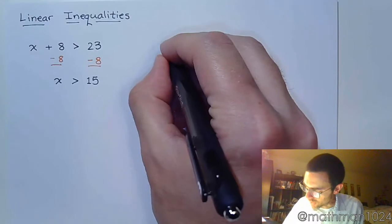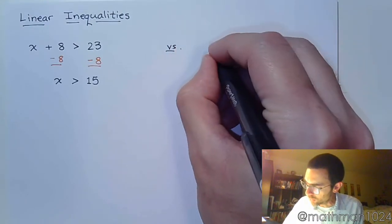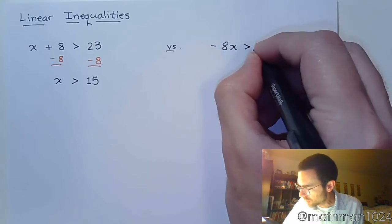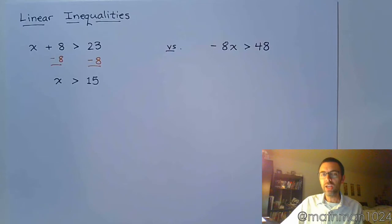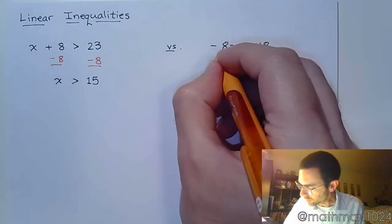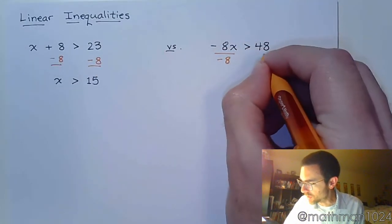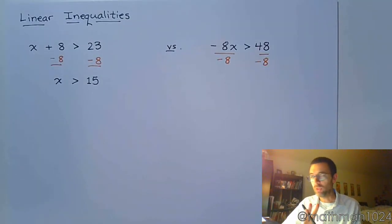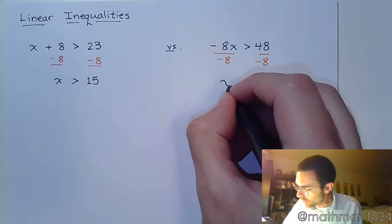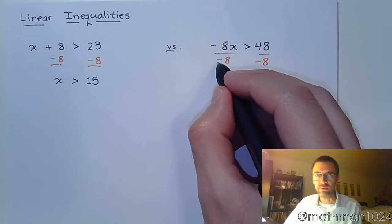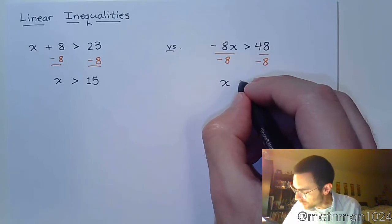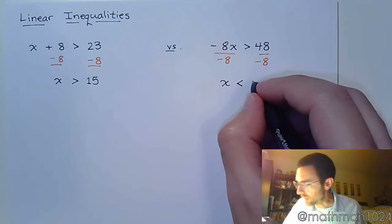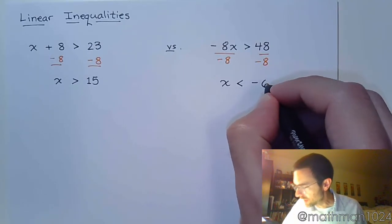But compare that to having the inequality negative 8x is greater than 48. If this were an equation, you would divide both sides by the coefficient which is negative 8 just like that. But here since we are dividing by a negative, that means the inequality symbol is going to flip around. So instead of it being greater, it's going to become less than. And so we have this inequality.